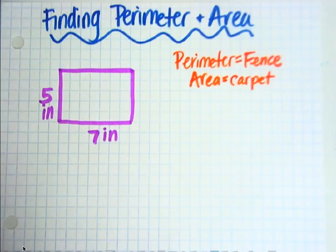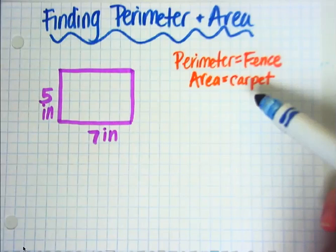Today we're going to find the perimeter and the area of a rectangle. Sometimes it's confusing and we often forget which one is which. So over here I have put a little note.